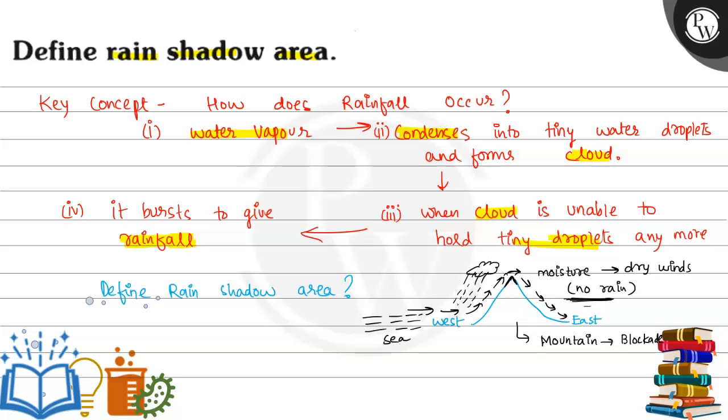The definition is: the part or the side of the mountain which does not receive rainfall.